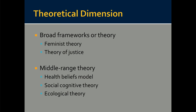Relative to the theoretical dimension, researchers may incorporate theory at two levels. First, a researcher may incorporate theory from broad frameworks — that can come from feminist theory or theory of justice. Second, a researcher may apply one of the many middle-range theories — examples might include the health beliefs model, social cognitive theory, or ecological theory, just to name a few.